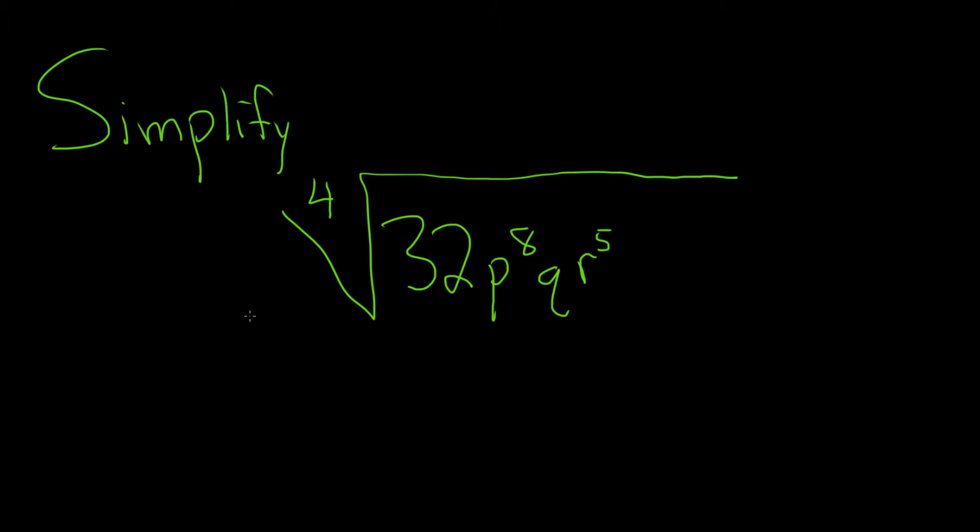And so whenever we do that, the goal is to basically write each of these pieces to the fourth power the best we possibly can. So obviously the q cannot be written to the fourth power, so we leave that alone. But the other terms, we do our best. So let's go ahead and do that.